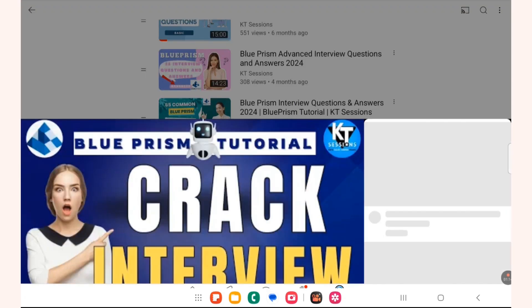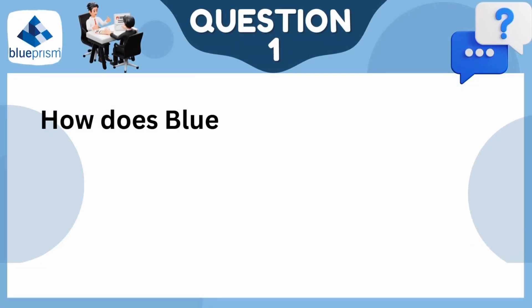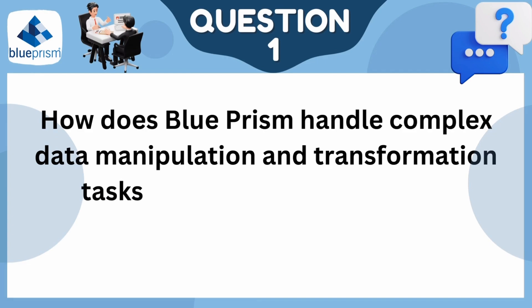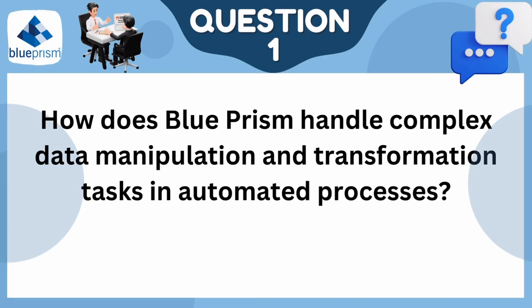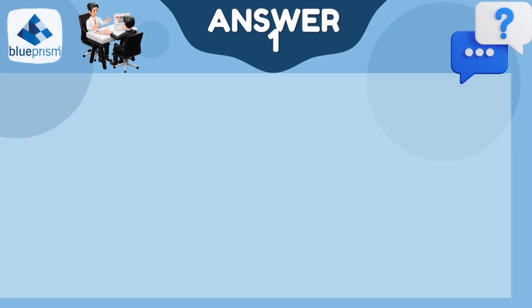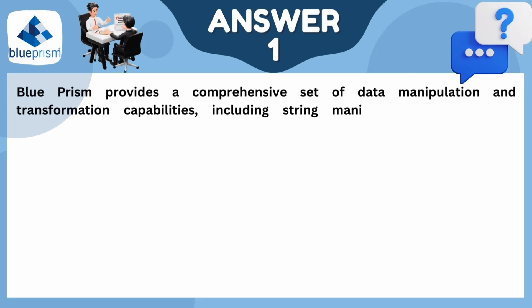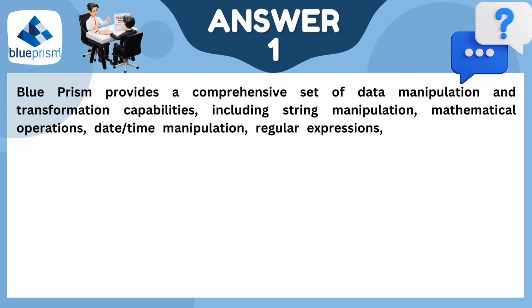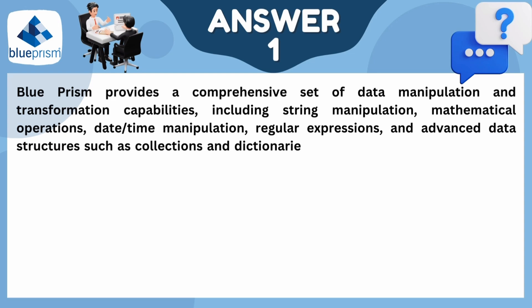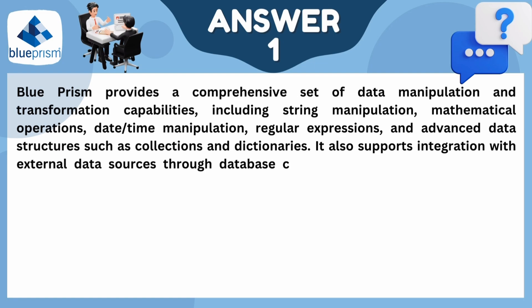The first question is: how does Blue Prism handle complex data manipulation and transformation tasks in automated processes? Blue Prism provides a comprehensive set of data manipulation and transformation capabilities, including string manipulation, mathematical operations, data manipulation, regular expressions, and advanced data structures such as collections and dictionaries. It also supports integration with external data sources through database connectors, web services, and APIs, enabling complex data processing tasks to be performed efficiently within automated processes.